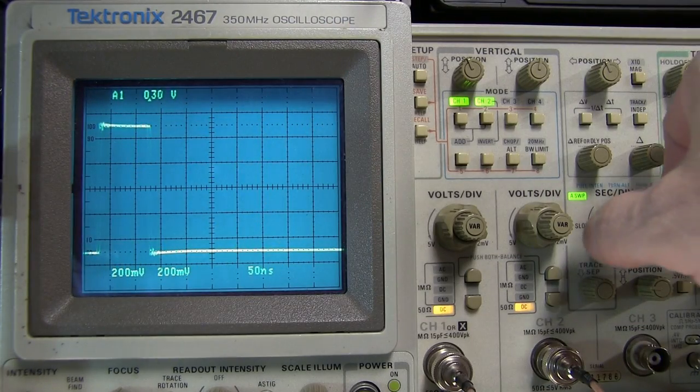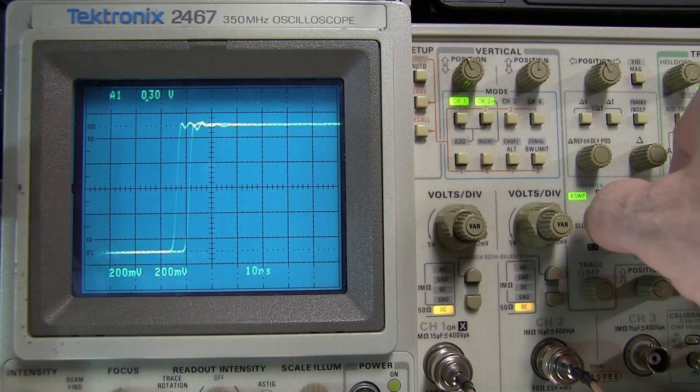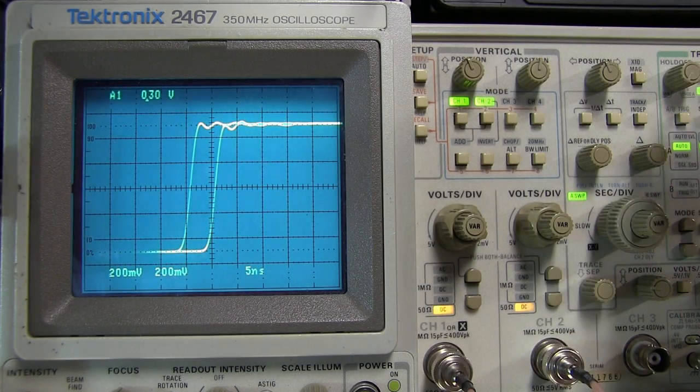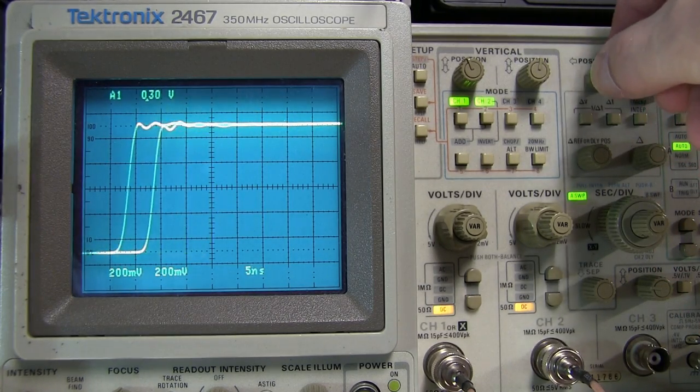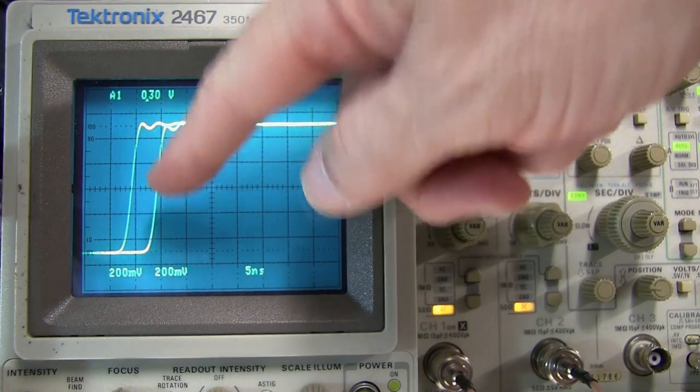Now I've got equal length coax running from the signal generator to channel 1 and channel 2 here. We can see the individual pulses, and if I just increase my sweep speed here to about 5 nanoseconds per division, you can actually now see the difference on the leading edge of the traces.